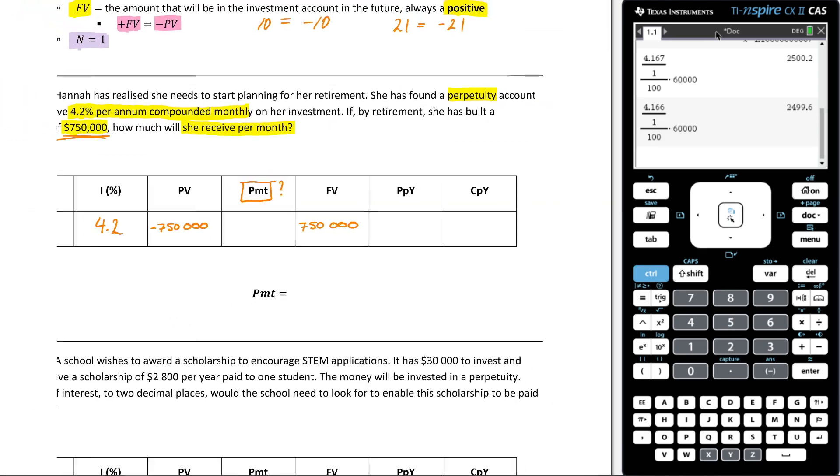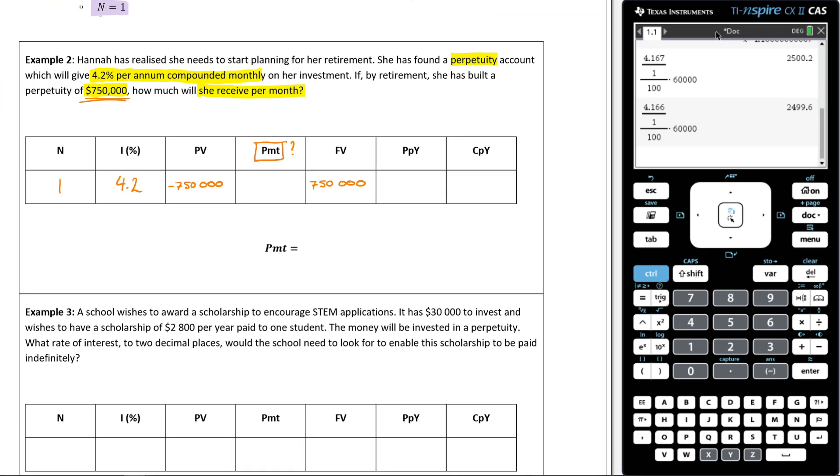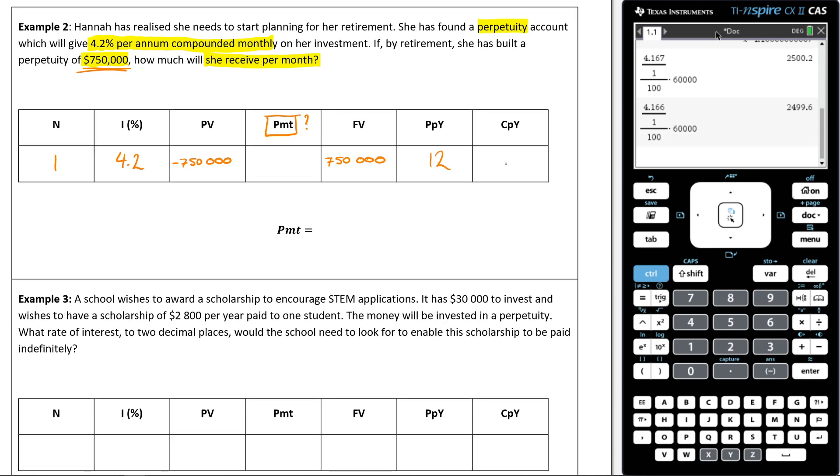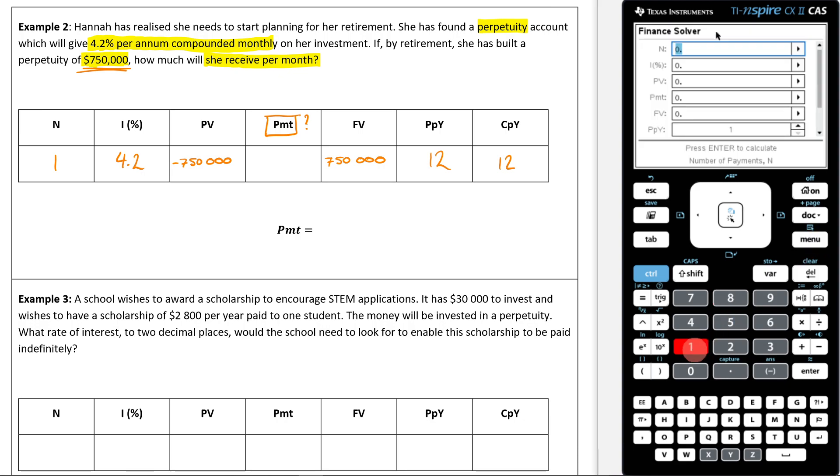My PBY and CPY, well, I'm receiving the payments monthly and it's compounding monthly. Remember that number will always be the same. And because it's monthly, there are 12 months in the year. Now I can use my finance solver menu, eight, one. That's going to be one. That's going to be 4.2. My present value will be negative $750,000, one, two, three. My payment, I don't know. My future value will be positive $750,000, one, two, three. And my PBY will be 12 and my CPY will be 12.